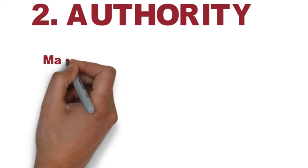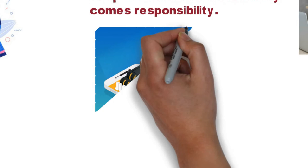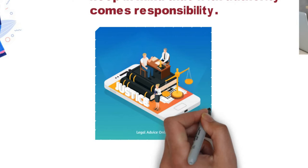Number two: Authority. Managers must have the authority to give orders, but they must also keep in mind that with authority comes responsibility. For example, the final authority to interpret our constitution is the Supreme Court. The Supreme Court of India is the highest judicial forum and the last court of appeal under the Constitution of India.